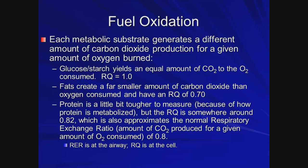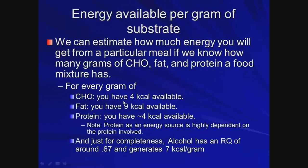The respiratory exchange ratio is what we actually measure at the airway; the assumption is that it equals the respiratory quotient occurring at the cellular level. You should know how many calories are generated per gram of each substrate: a gram of carbohydrate produces four kilocalories, protein also produces four kilocalories, and fat yields about nine kilocalories. For completeness, alcohol has an RQ of about 0.67 and generates seven kilocalories per gram.